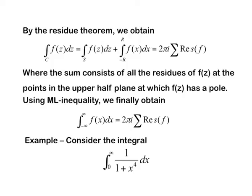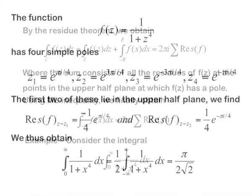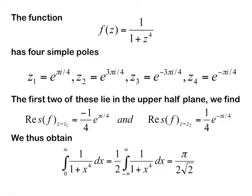For example, consider the integral of 1 over (1 plus x^4). The corresponding complex function is 1 over (1 plus z^4), which has 4 simple poles. Of these 4 simple poles, 2 lie in the upper half plane (z_1 and z_2) and 2 in the lower half plane. We calculate the residue only at z_1 and z_2. The values of these residues are given, and when we sum the two residues and apply the Cauchy residue theorem, we obtain the integral equals π over (2 root 2).